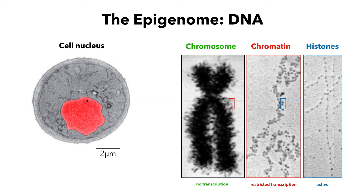Histones can be either grouped together, forming lumps of DNA, or, as we can see in the picture on the right, relaxed and spread out. The changes in the way DNA is packaged is used for cell division when whole chromosomes need to be moved around, or to regulate what code is more or less accessible for transcription.